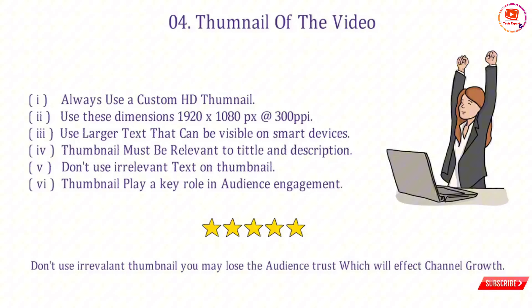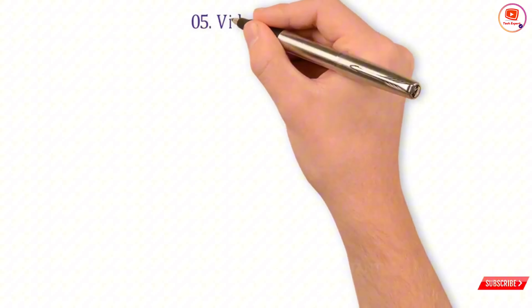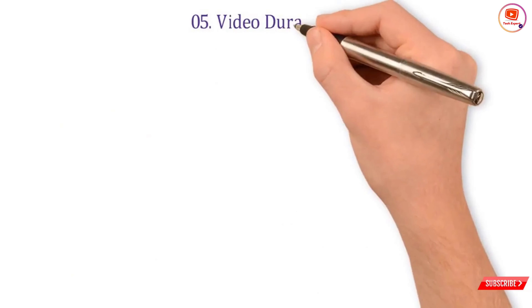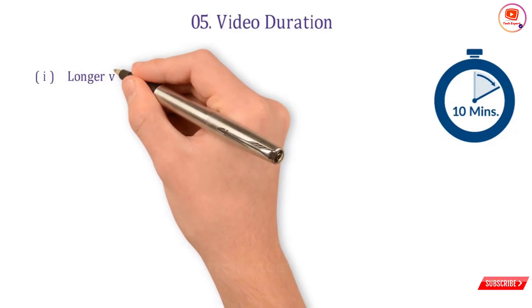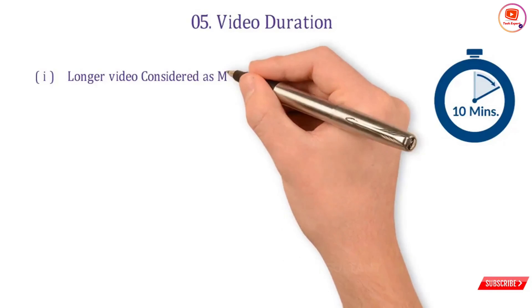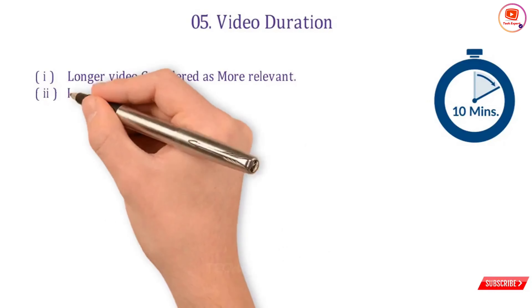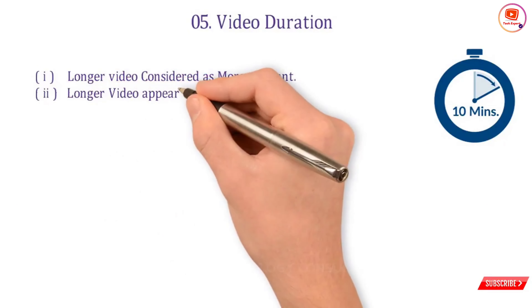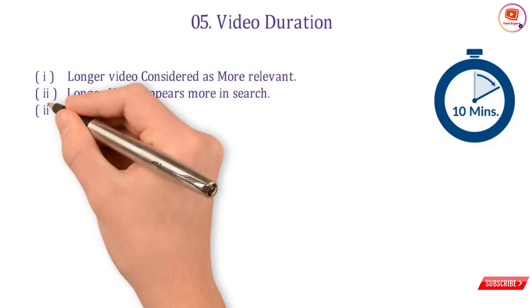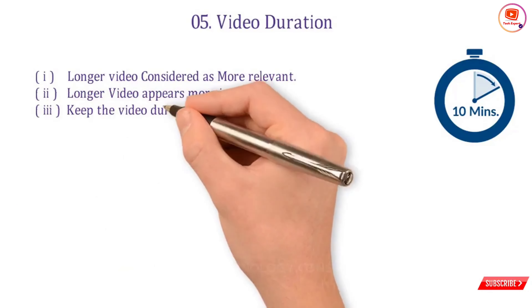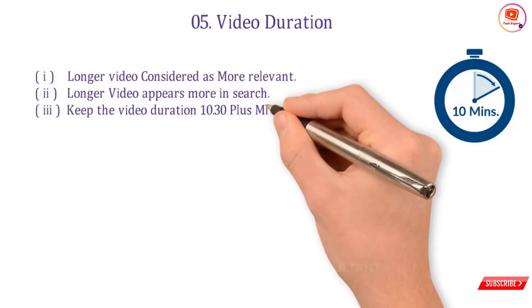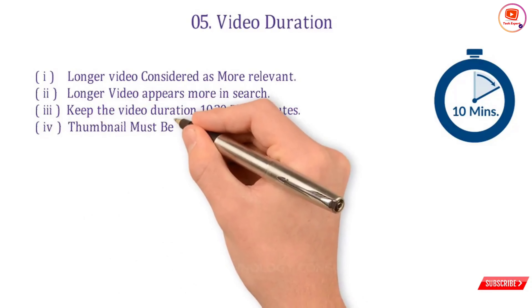You can also describe your content on the thumbnail. Number five — video duration: do proper research on the topic you have selected, and after research start preparing your video. Longer videos are considered more relevant and appear more in search. Keep the video duration at ten and a half minutes or more.